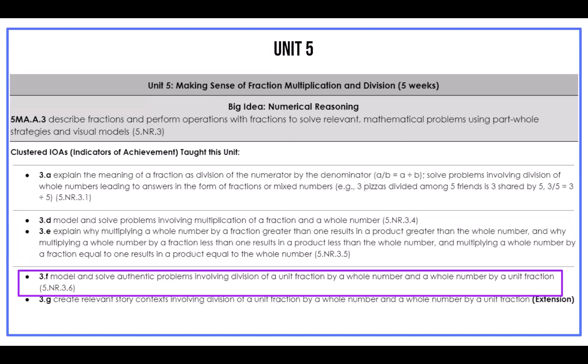Finally, with IOA 3F, students model and solve authentic problems using division of a unit fraction by a whole number and a whole number by a unit fraction. Students make sense of these division situations in terms of finding the number of equal-sized groups or finding the size of each group. Before solving a problem, students need to think through what information is given, asking questions like: What do you notice? What are we trying to figure out — the size of the group or the number of groups? This supports students in matching visual models with the question, another skill to master within this IOA.